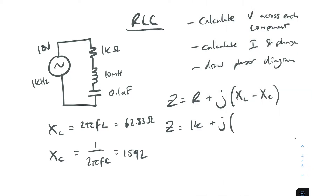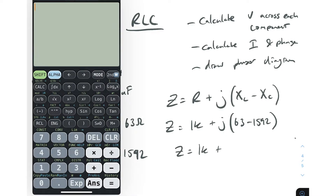Now we can complete our impedance equation. We've got XL which is 62.83 — let's round that to 63 — minus 1592. That gives us an impedance of 1k plus J(63 minus 1592), which is 1k minus J1529.